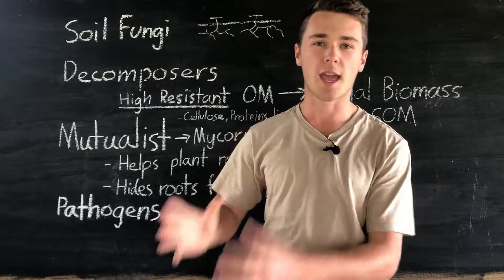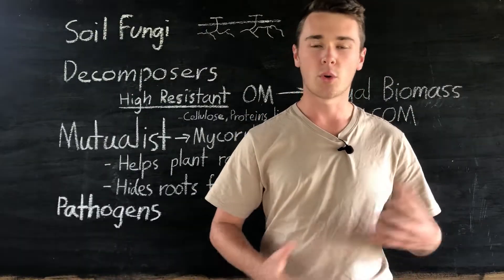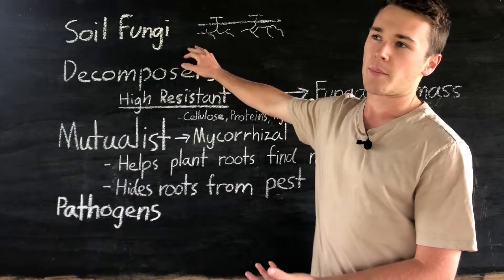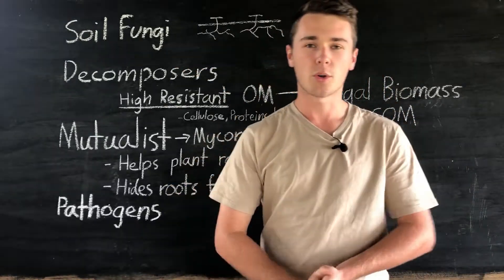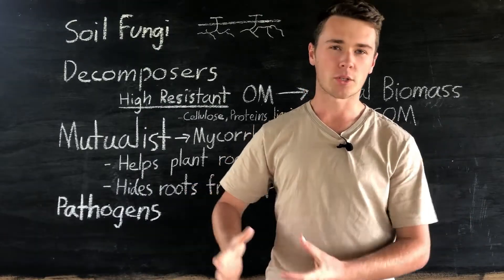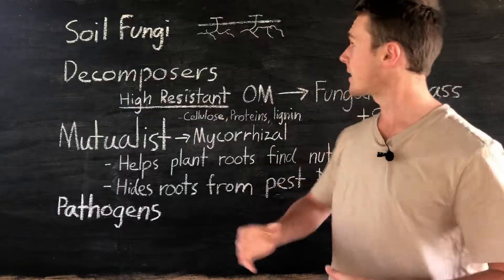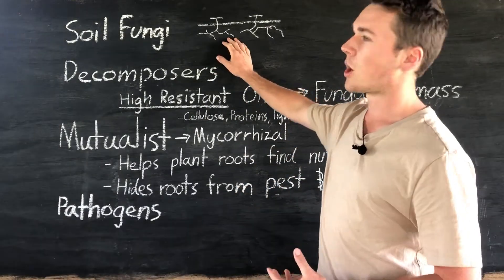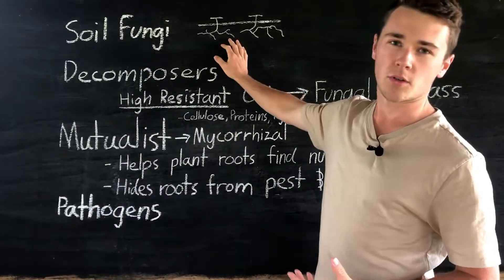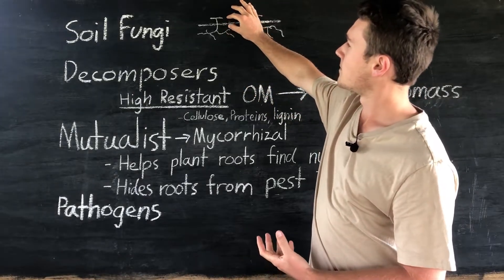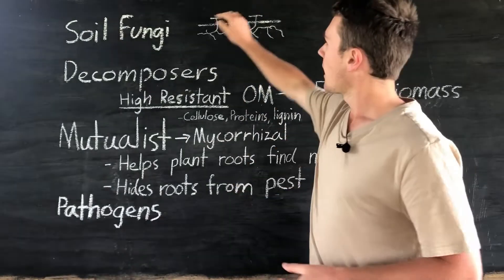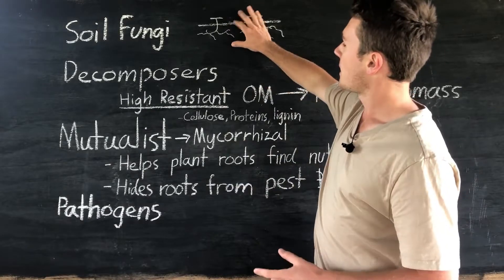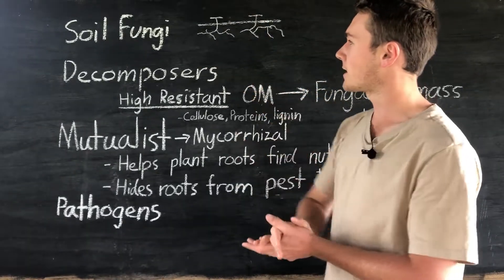Fungi are heterotrophic, which means they get all their energy and nutrients from consuming other organisms or molecules in their environment. Whereas plants make their energy from light, carbon dioxide and water, fungi take their energy from other organisms. Fungi form structures called mycelium — thread-like structures that run mostly underground or inside organic matter. When fungi want to reproduce, they pop a reproductive organ above the ground, such as a mushroom head, which releases spores that distribute across the land and grow new mycelium.